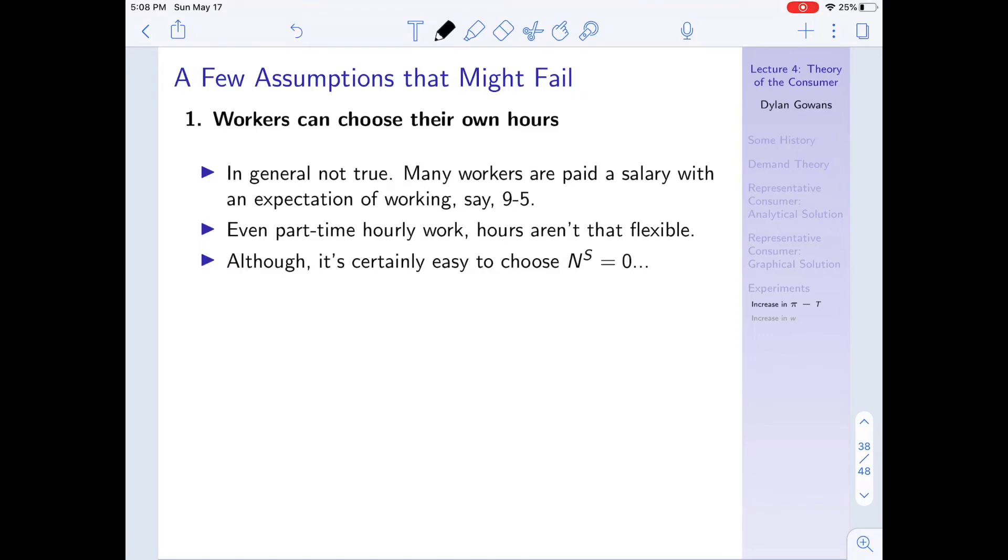And I say here there's a few reasons why this might not be the case, why you might not follow what the model says. And that's because there's a few assumptions that the model makes that might fail. So let's start with one, maybe the more obvious one, is that one assumption is that workers can choose their own hours. So the way the model assumes this is that the worker looks at the wage in the market, looks at their non-wage income, and then chooses the amount of leisure hours to take. In general, this isn't true, right?